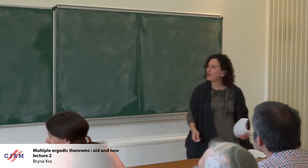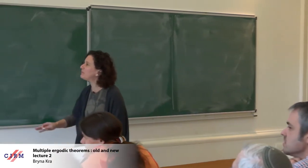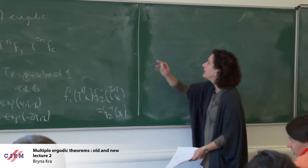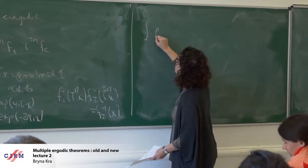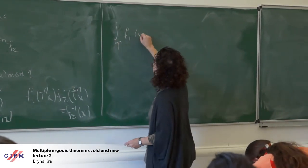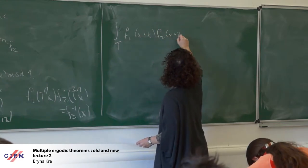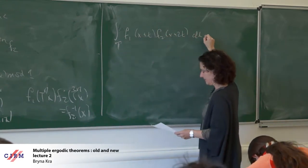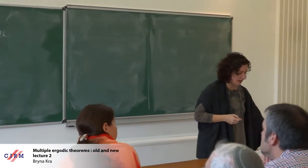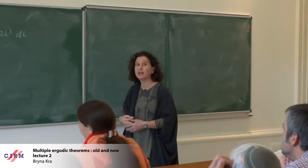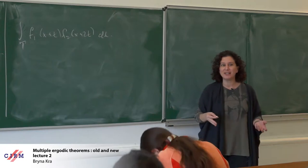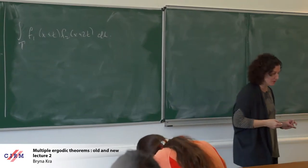More generally, if you're going to compute this average for an ergodic rotation, this should converge to the integral over the circle of f1(x + t) times f2(x + 2t). My only point in bringing this up is to say there has to be more complicated behavior here. You can't just hope to project down to the invariance and know what the answer to this convergence problem is.